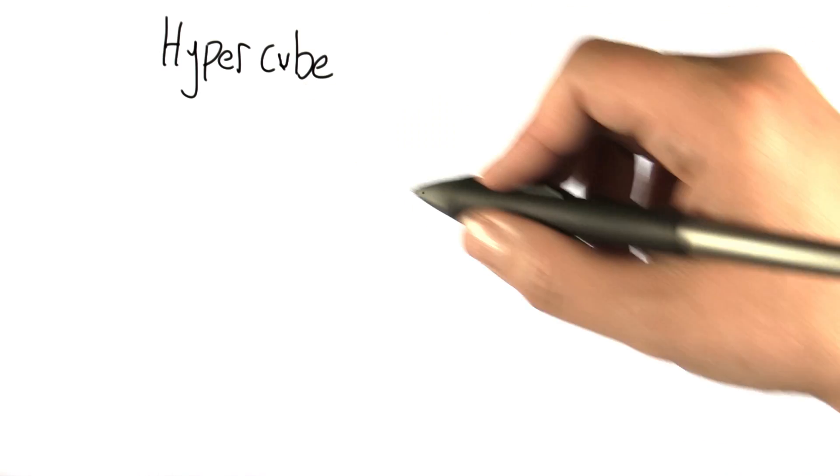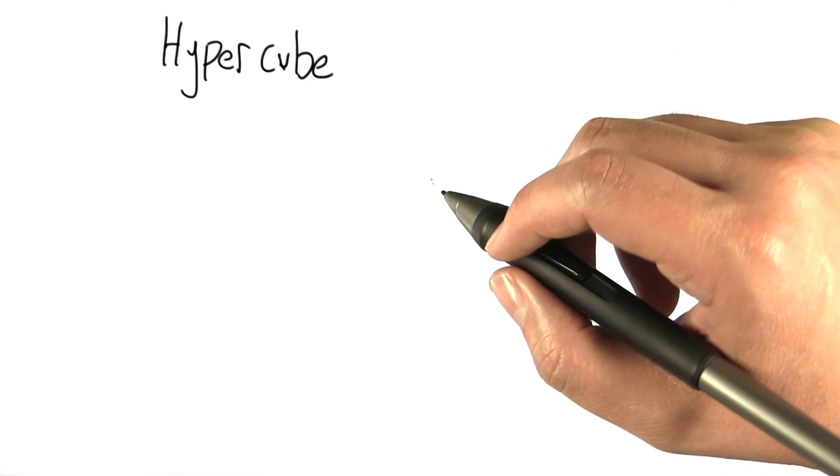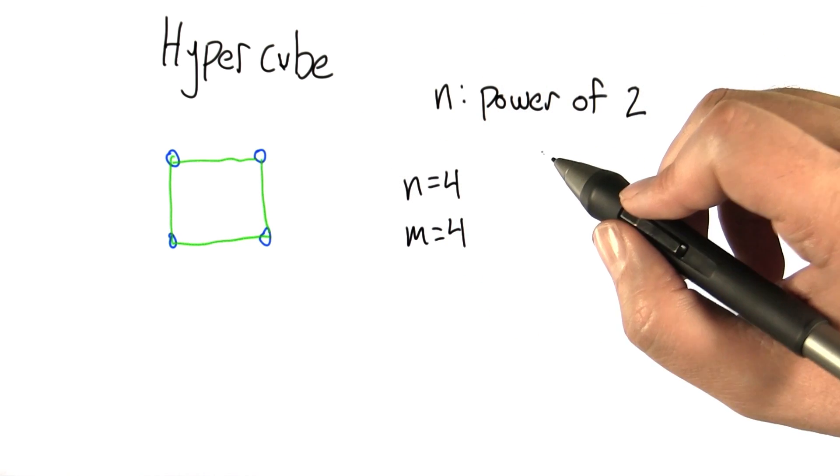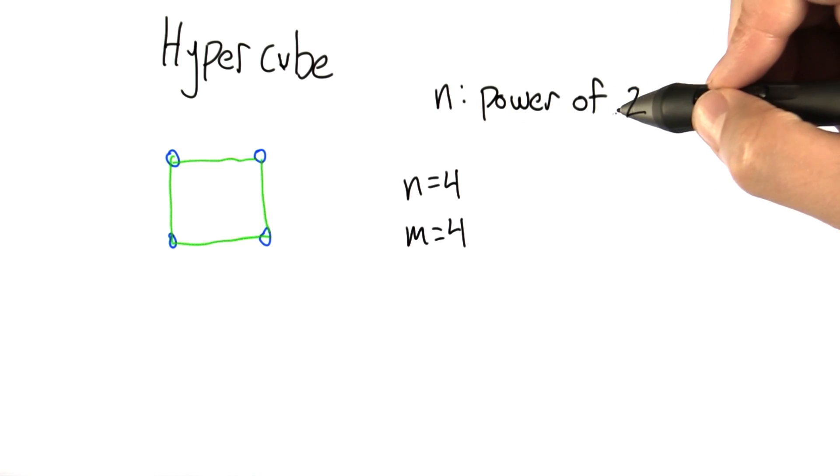The next kind of graph we're going to look at is called a hypercube, and the graph is almost but not quite as cool as the name. We're going to define a hypercube for any number of nodes as long as that number of nodes is a power of 2.